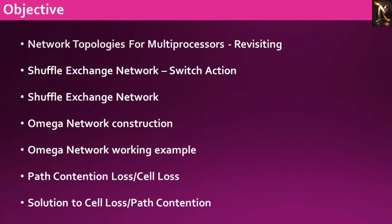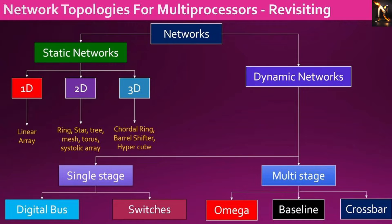We will then explore the shuffle exchange network using an example, examine the construction and operation of the omega network, and finally discuss the occurrence of path contention with cell loss and propose solutions to mitigate it. The network is composed of both static and dynamic components. The static networks are further categorized into one, two, and three-dimensional networks. The dynamic network consists of single-stage and multi-stage interconnection networks.